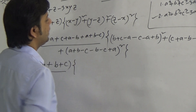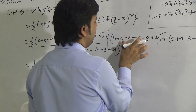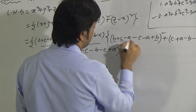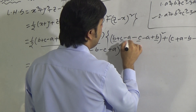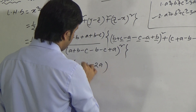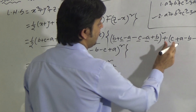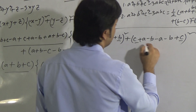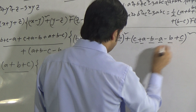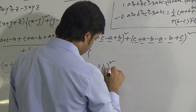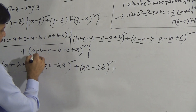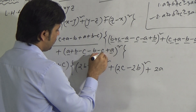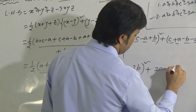So we have: ½(a + b + c)[(2b − 2a)² + (2c − 2b)² + (2a − 2c)²]. We can take 2 as common from each bracket inside the squares. When 2 comes outside the square it becomes 4. So this gives: ½(a + b + c)[4(b − a)² + 4(c − b)² + 4(a − c)²].